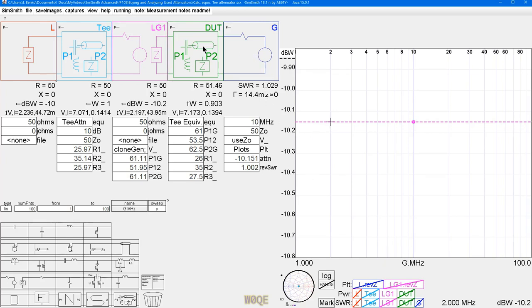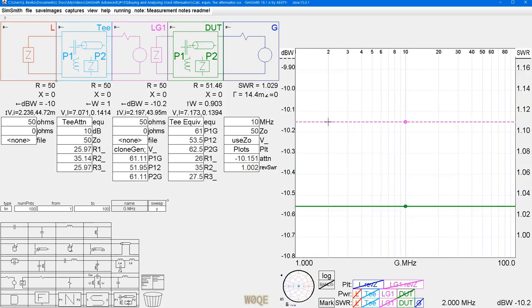We can look at the SWR looking in this direction, 1.029. We can look at the SWR going back this way, 1.002. And again, the ideal attenuator, of course, is going to be right. It's going to be 10 dB loss.